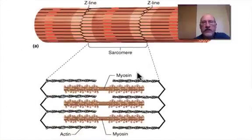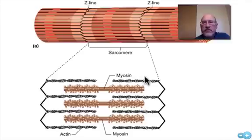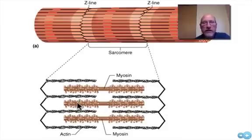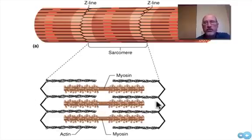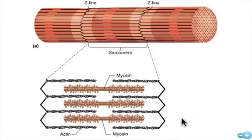Looking more closely at the myofibrils, we can see the thin filaments made out of actin and the thick units made out of myosin. The sarcomere is the functional unit of the muscle — that's where it all happens. Remember, the job of the muscle is to shorten, to contract, and the sarcomere is the actual unit that's going to do that job. Let's watch a short video and see the animation.